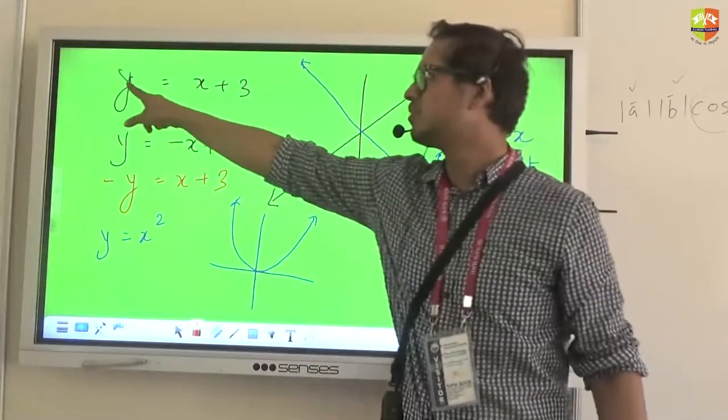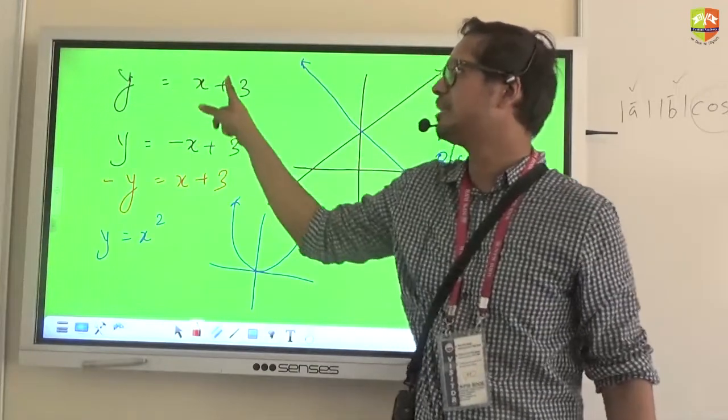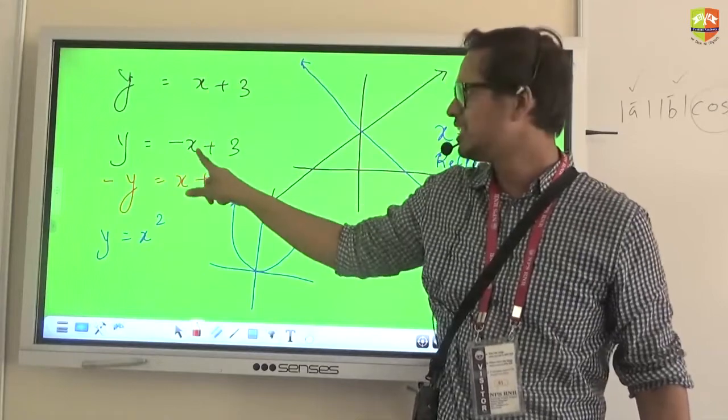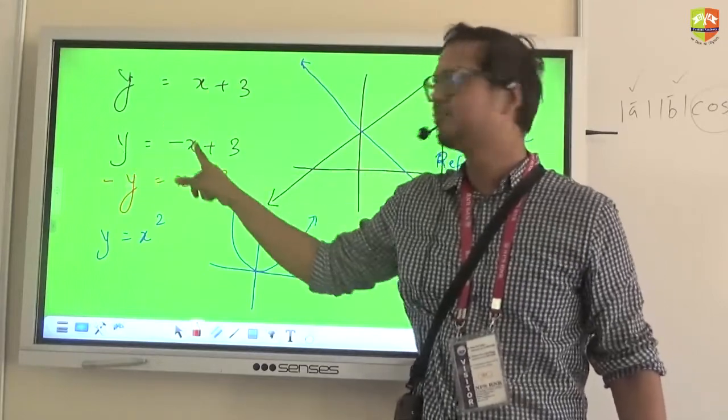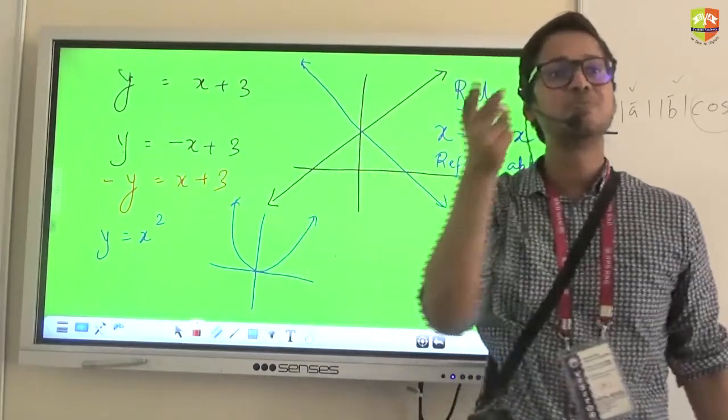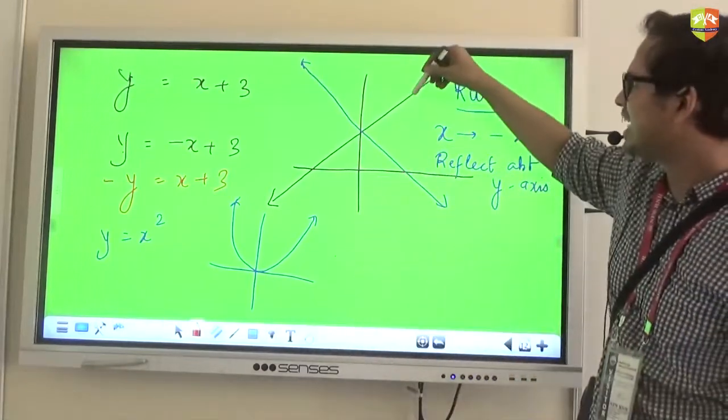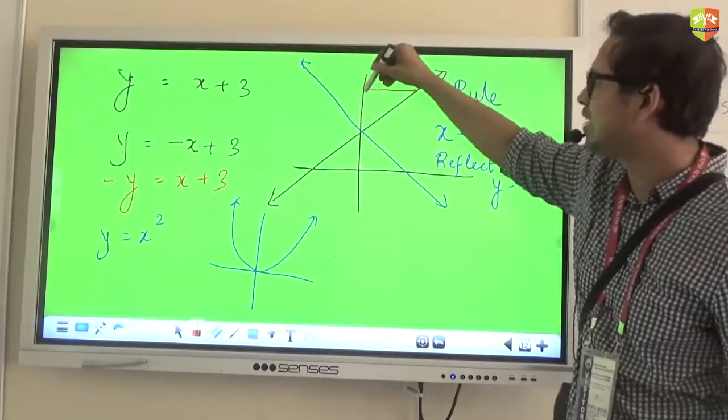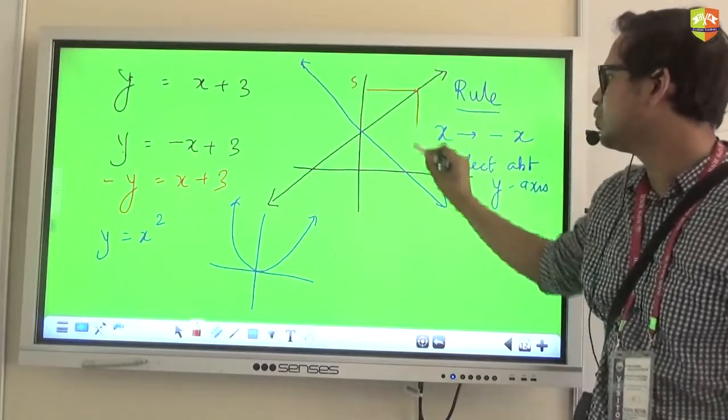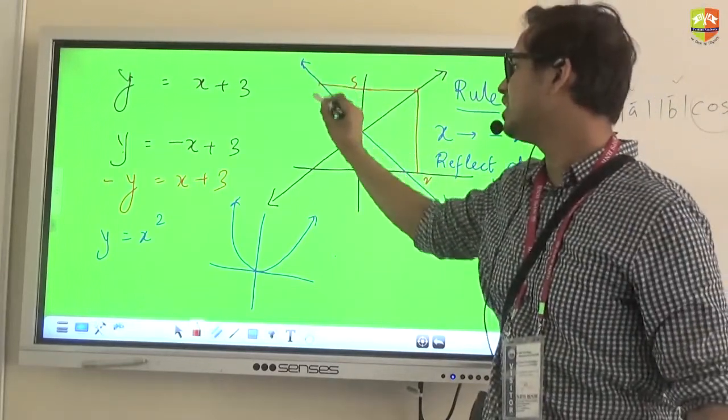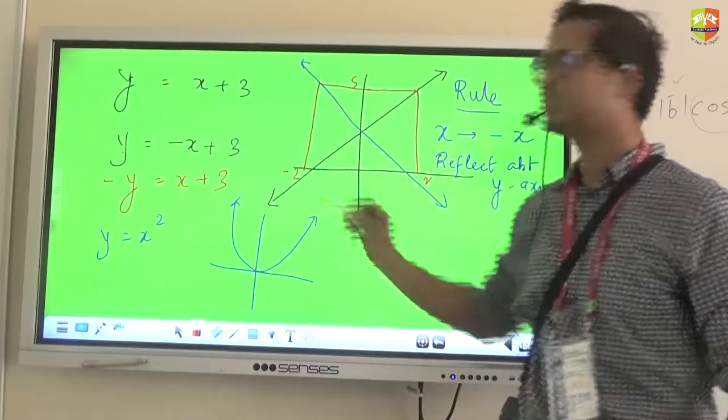So let's say initially I got Y is equal to 5 from X equal to 2. Now in this case, Y equal to 5 would come from X equal to minus 2, correct? So whatever was the point here, let's say this was Y equal to 5, it came from 2,